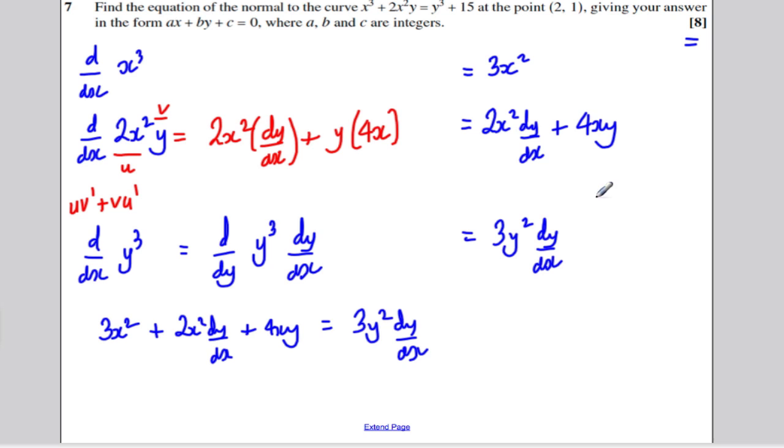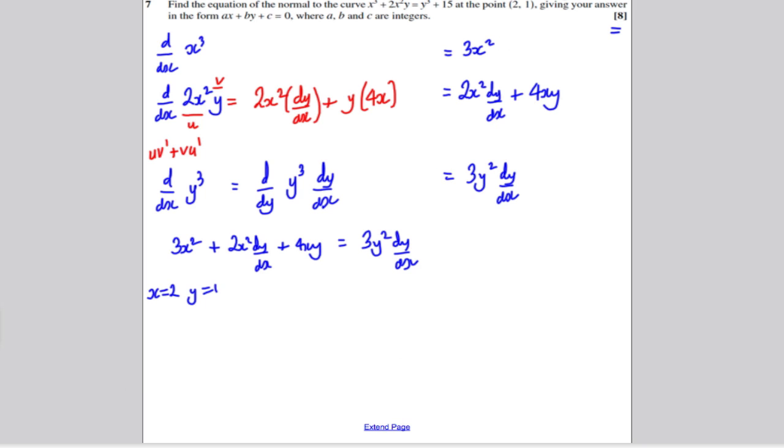Now, at this point, we wanted to find the equation of the normal at the point (2, 1). So we need the gradient of the tangent at (2, 1). So I'm going to stick in x is 2 and y is 1 straight away at this point. And x is 2, y is 1, before rearranging. I think it makes life a whole lot easier.